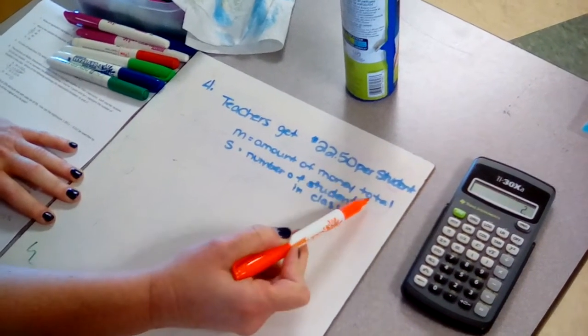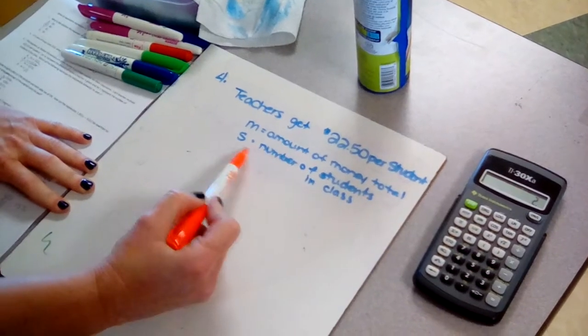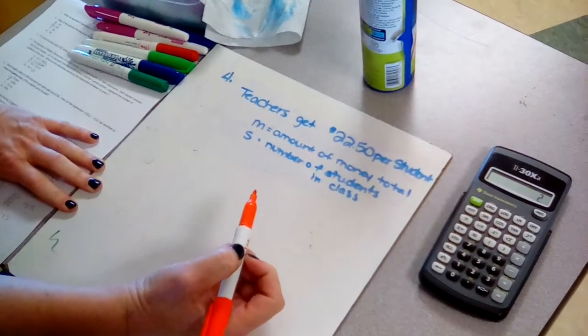M is representing the amount of money total that they get and S is representing the total number of students they have in their class.